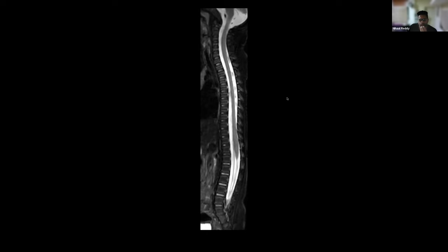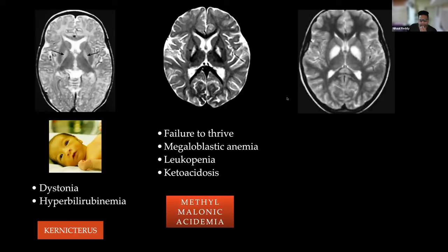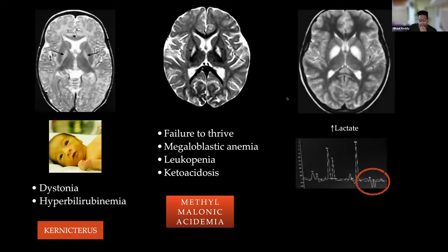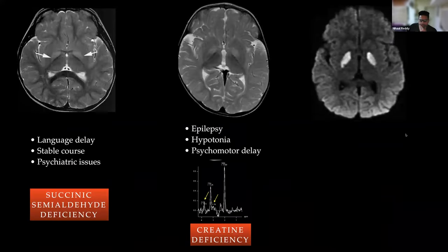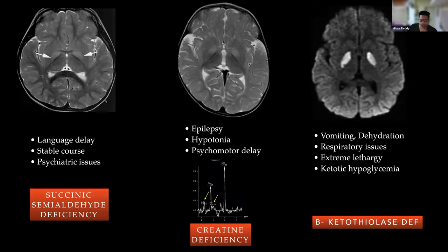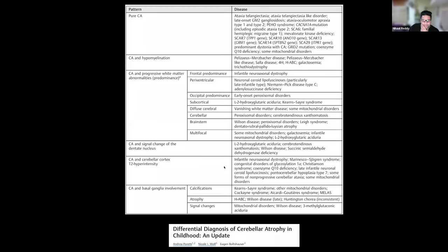Spinal cord sagittal imaging was done without axial — not sure if cord signal is real or artifactual. Based on the globi pallidi findings, differentials include mitochondrial disorder, especially pyruvate complex disorders, given the minor lactate peak on spectroscopy. The child also had cerebral atrophy. Signal changes in the basal ganglia make mitochondrial disorder something to be considered.